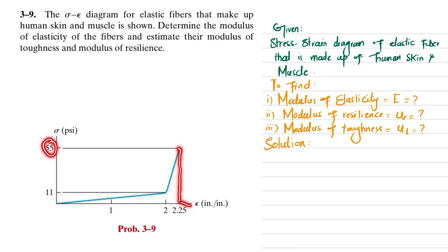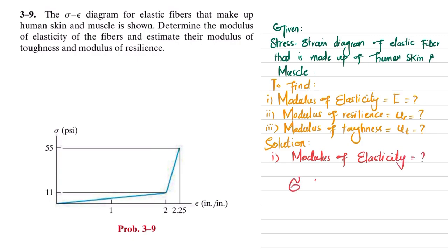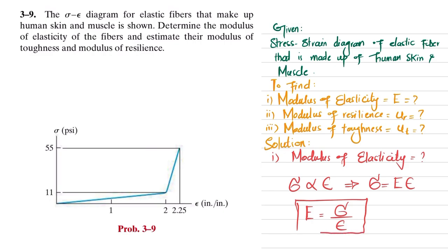The first part is the modulus of elasticity. We know that stress is directly proportional to strain, and from here we get stress equals E times strain, where E is the modulus of elasticity, that is stress over strain. It shows the resistance to deformation in the elastic region.